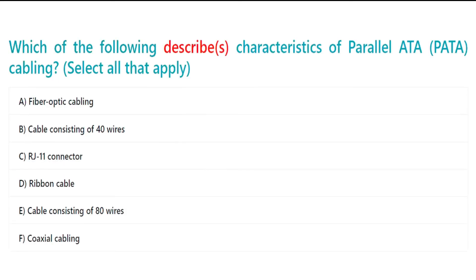Which of the following describe characteristics of parallel ATA (PATA) cabling? Select all that apply. A. Fibre-optic cabling. B. Cable consisting of 40 wires. C. RJ11 connector. D. Ribbon cable. E. Cable consisting of 80 wires. F. Coaxial cabling.